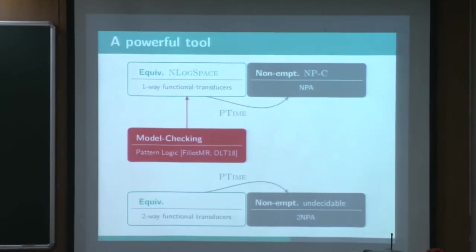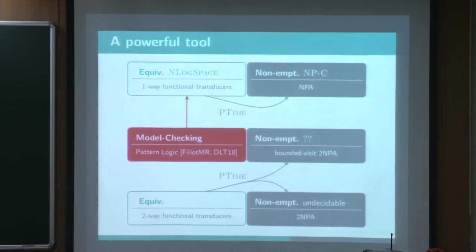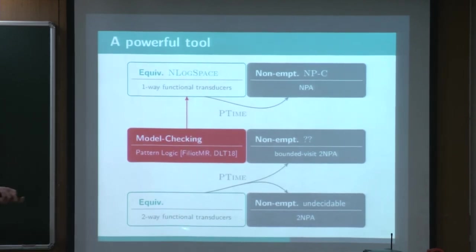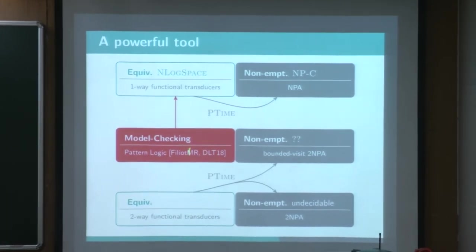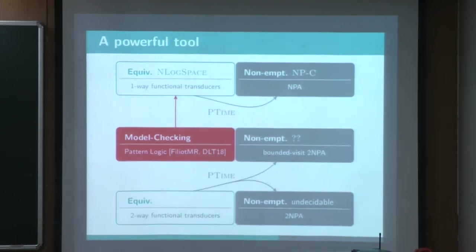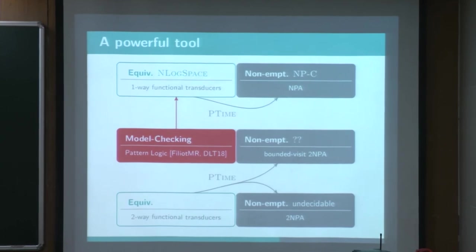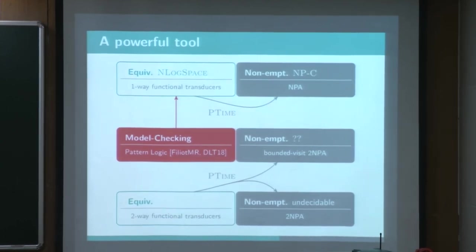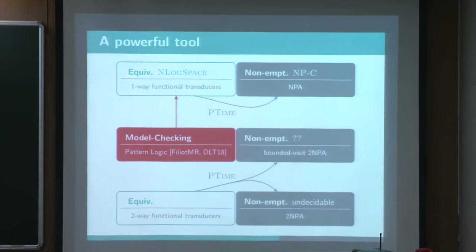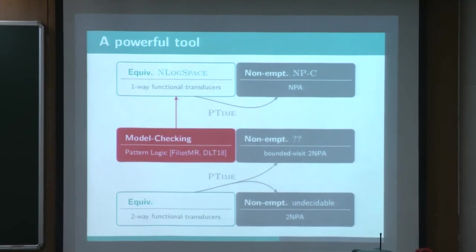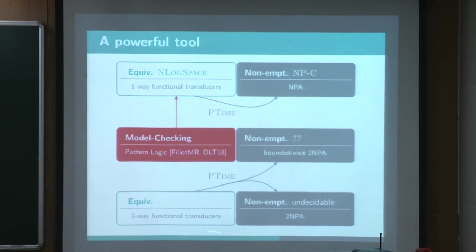So this is not the good way to go, but in fact we can use more of those functional hypotheses and be more restrictive and consider this subclass called bounded visits two-way Parikh automata. So a Parikh automaton, a two-way Parikh automaton is a bounded visit if the number of times each position is visited only depends on the automaton itself. And in fact, that will be bounded by the number of states.